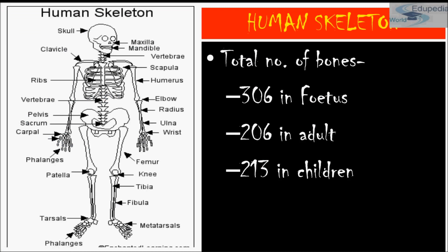The total number of bones in a human fetus is 306. In adults, they are 206, because as age progresses some bones get fused and the number reduces to 206. In children, there are 213 bones.